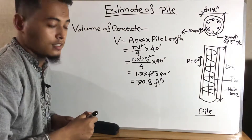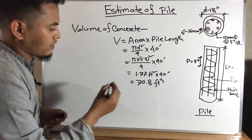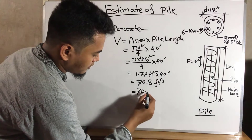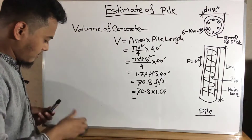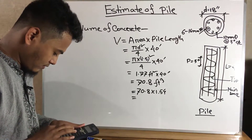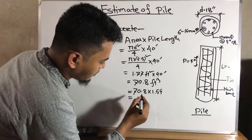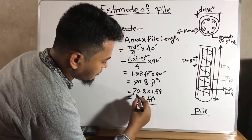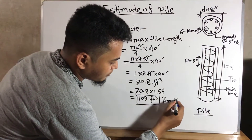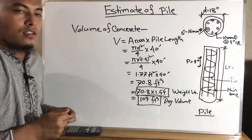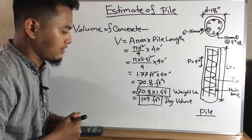This is the volume of concrete. Now we estimate the dry volume: 17.8 × 1.54, which equals approximately 27.39 cubic feet. This is the dry volume. Now we estimate the quantities of cement, sand, coarse aggregate, and fine aggregate.